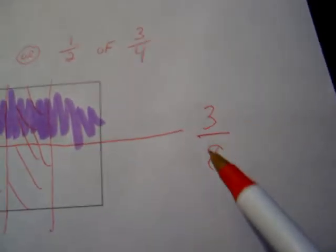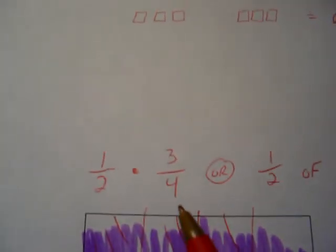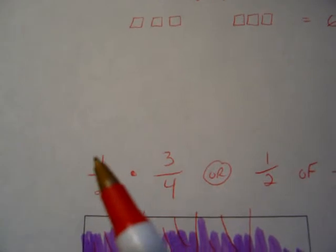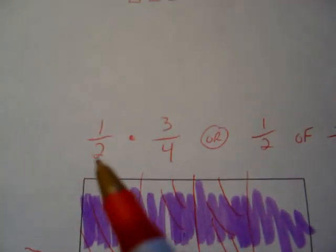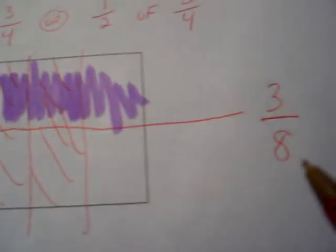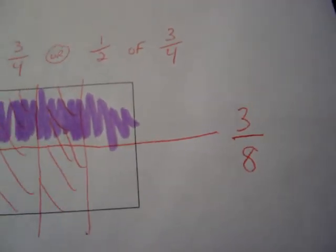Also to verify our answer 3 eighths, you can multiply straight across the numerator. 1 times 3 is the 3. In denominator, 2 times 4 is the 8. So there you have it.